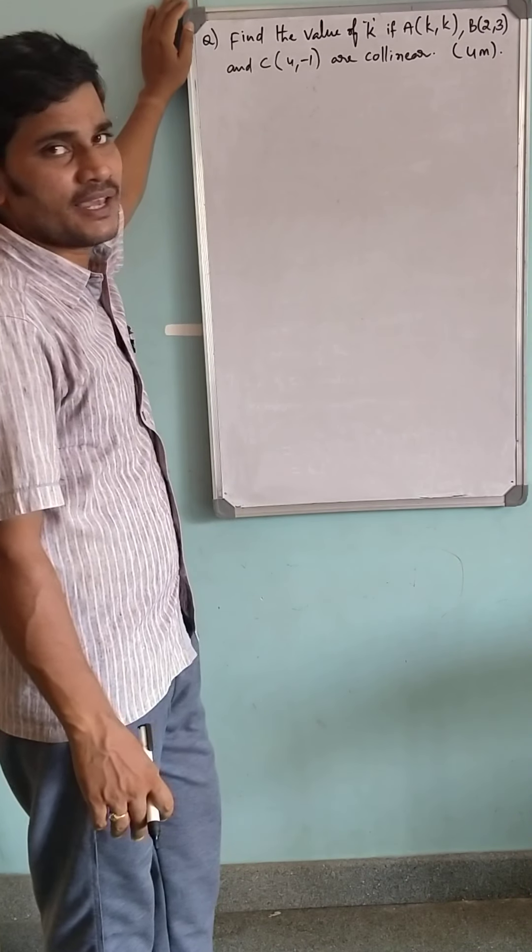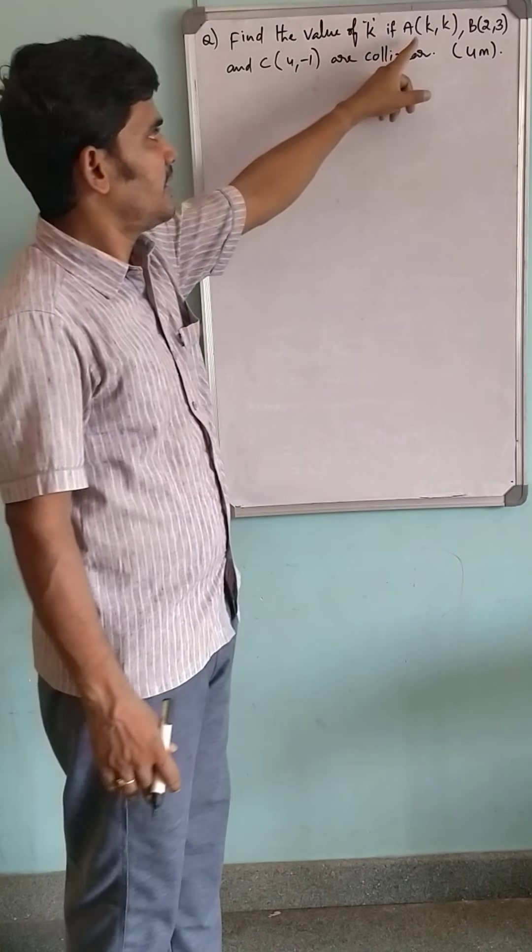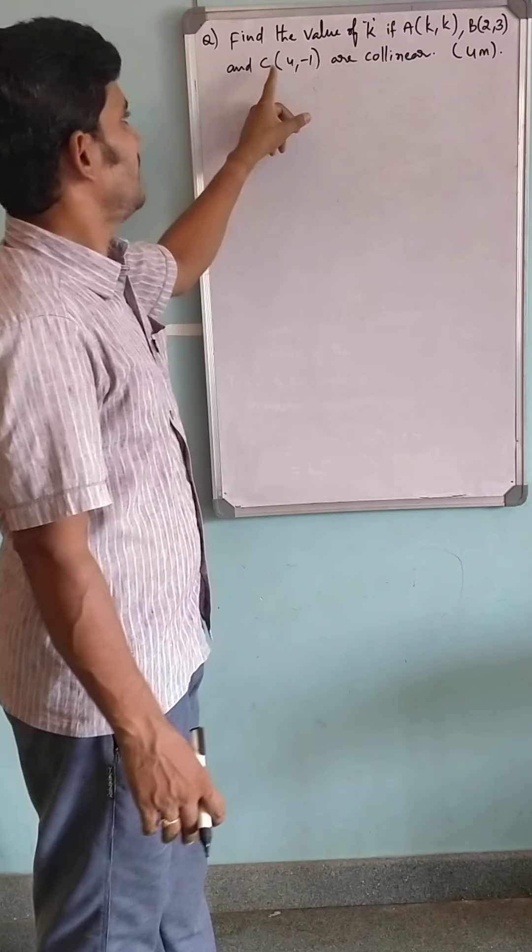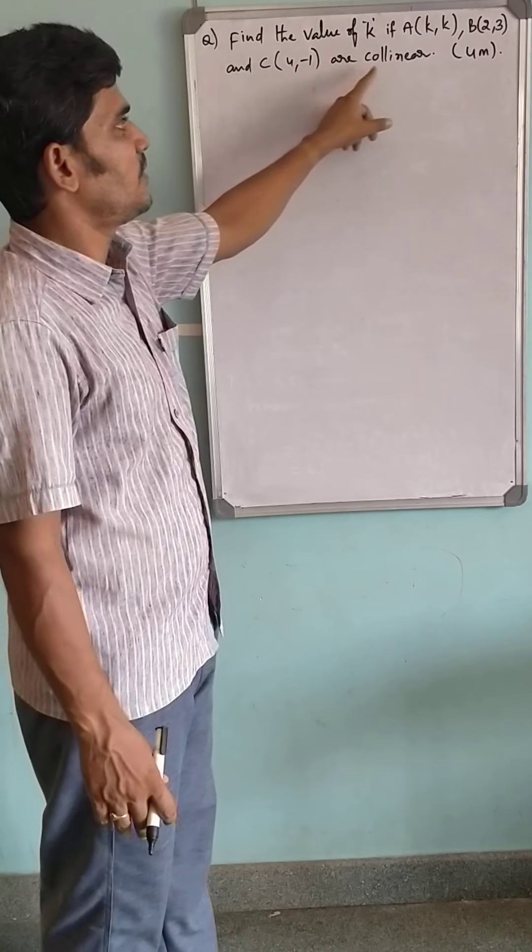Find the value of K if the points (K, K), (2, 3), and (4, -1) are collinear.